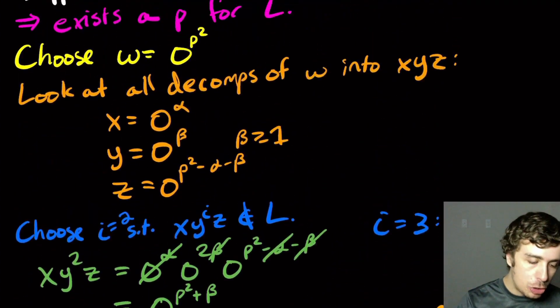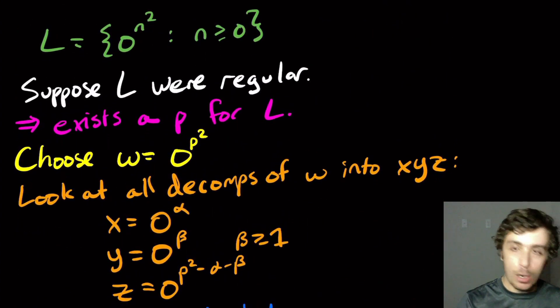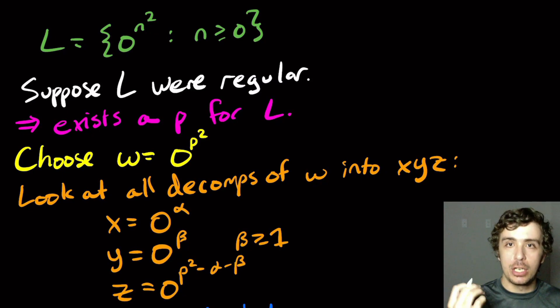Okay, cool. So that's how you show that the perfect squares language is not regular.